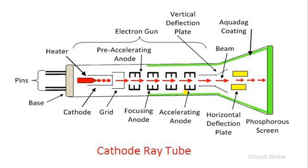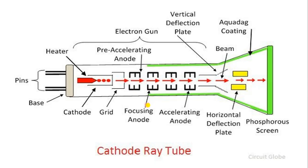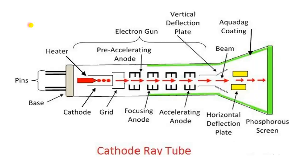This is the diagram and these are some points of the cathode ray tube. So let's understand what cathode ray tube is. Cathode ray tube, in short form, is called CRT. CRT is a device which converts electrical signal into visual signal. By applying voltage and current, it will convert into visual signal.